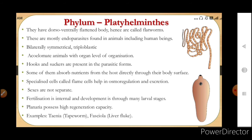Up to Ctenophora we were having diploblastic animals, but now as evolution progresses, we have triploblastic animals with three germ layers — ectoderm, mesoderm and endoderm. They are acoelomate animals with organ level of organization, meaning organs are formed. Acoelomate means there is no cavity between the body wall and the gut wall.